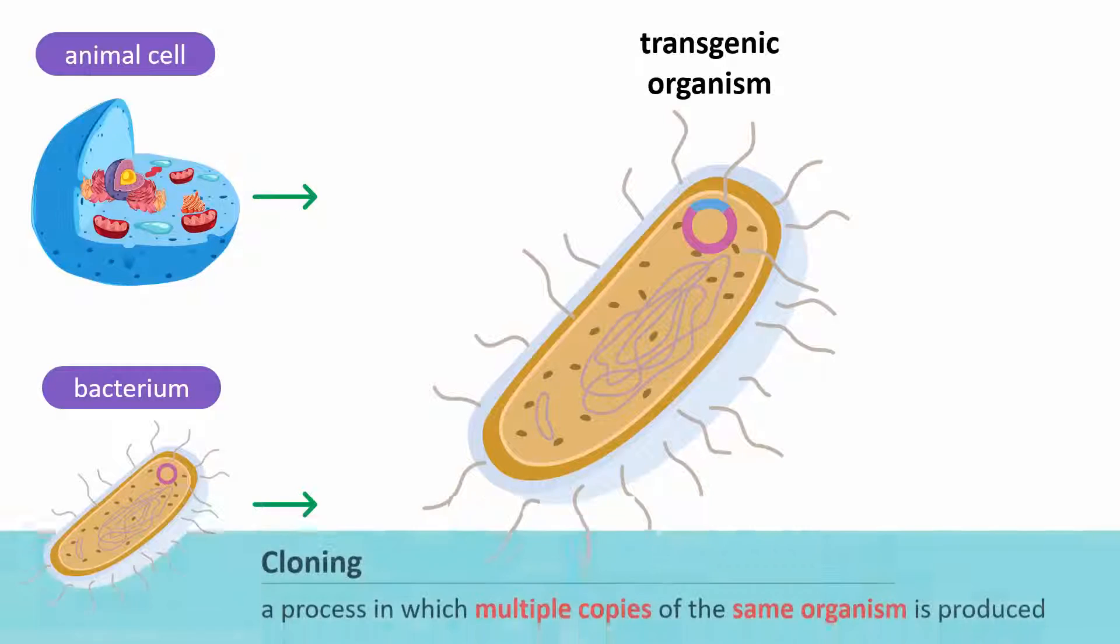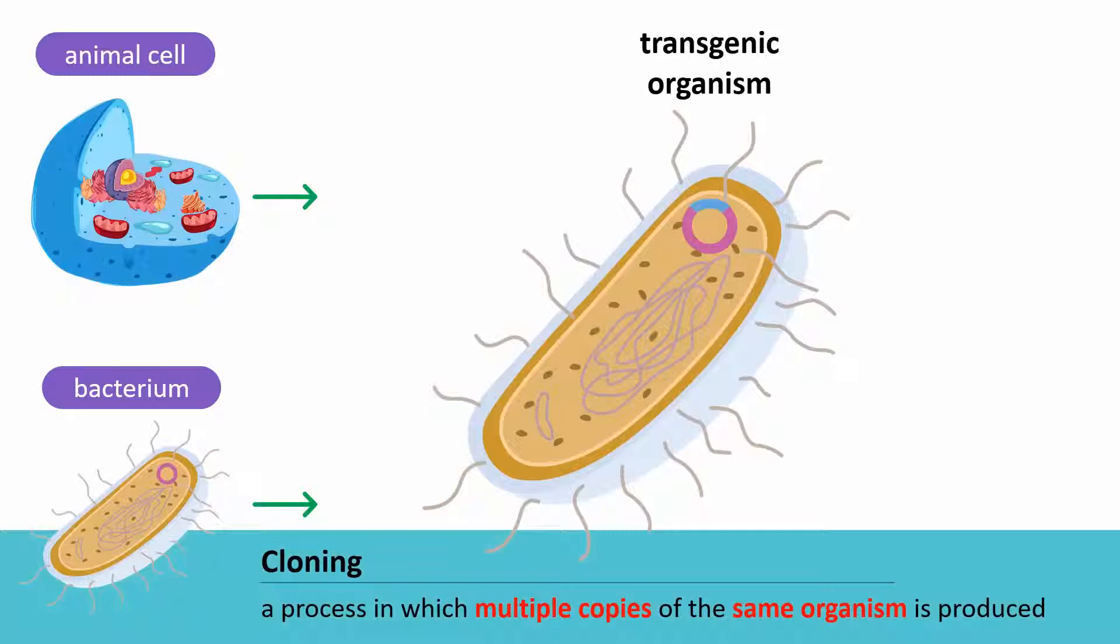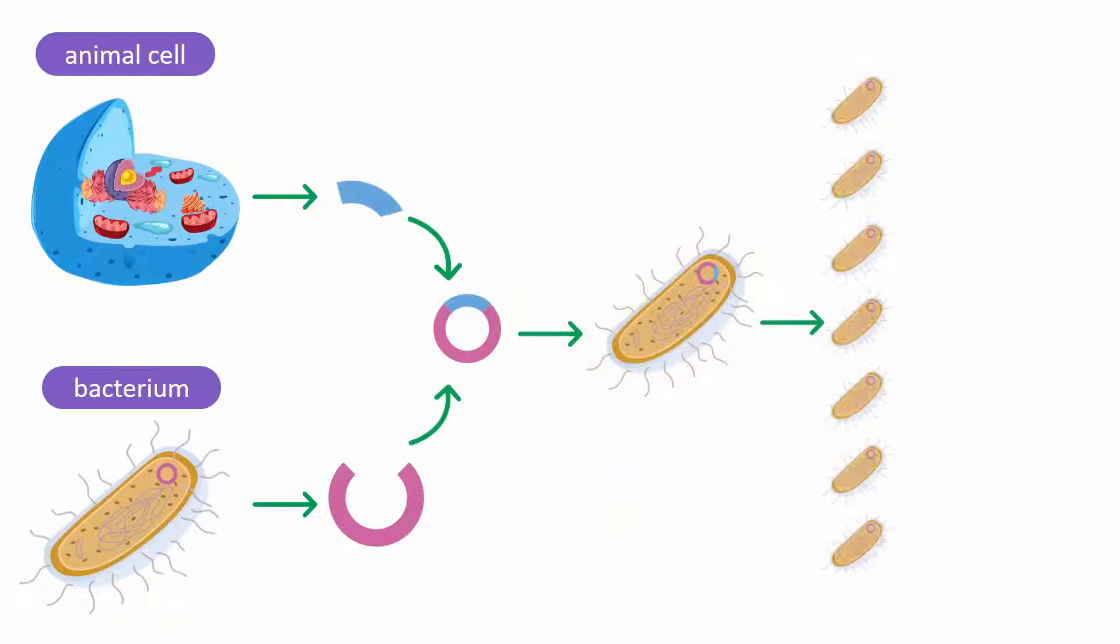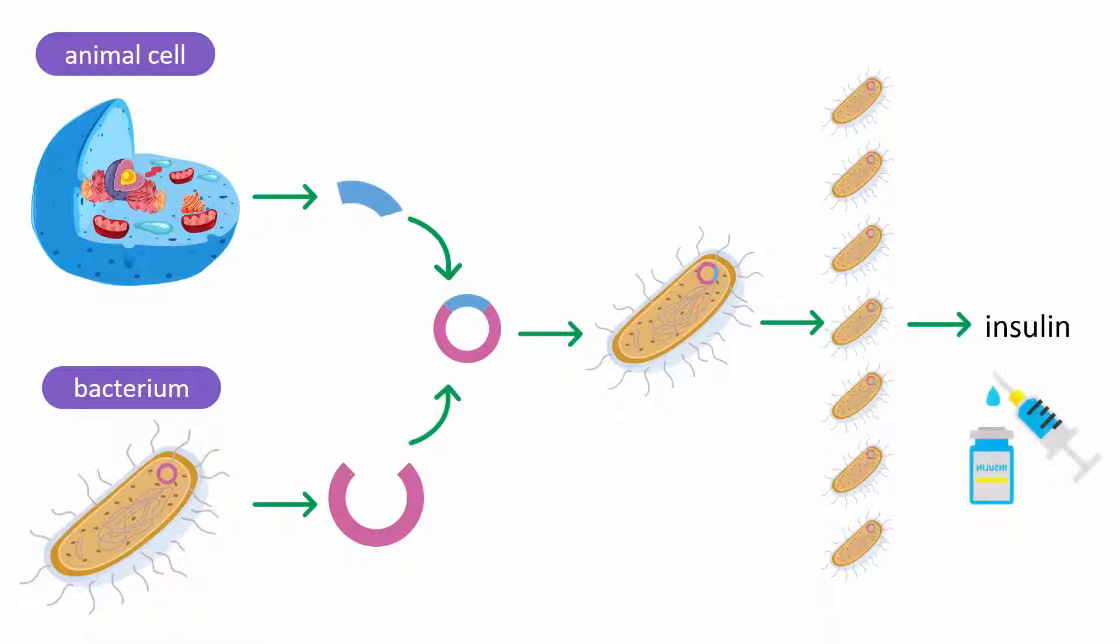The bacterium is then cloned, a process in which multiple copies of the same organism is produced. We end up with many bacterial cells that contain the gene that codes for human insulin. These bacteria are then provided the right conditions to start producing insulin. The insulin is then purified and packaged into bottles and insulin pens are used by patients with diabetes.